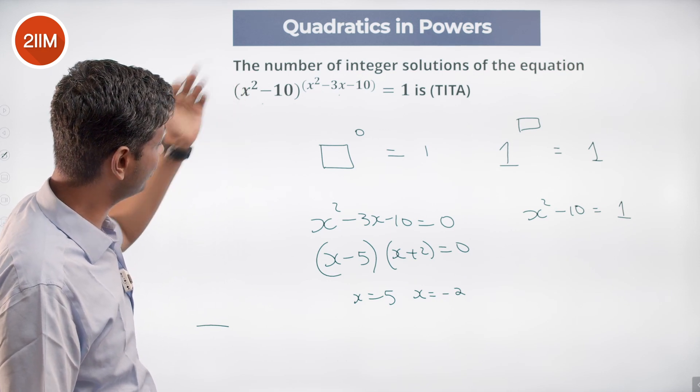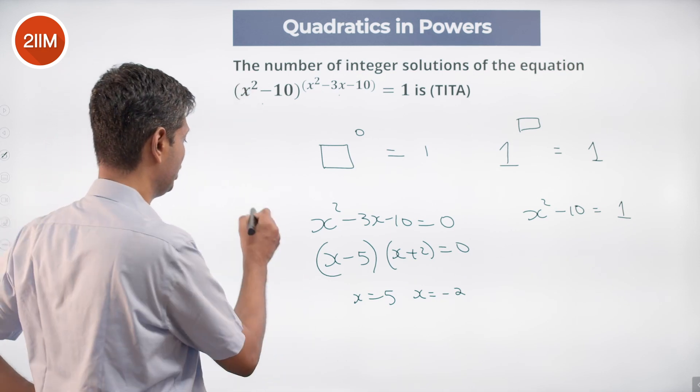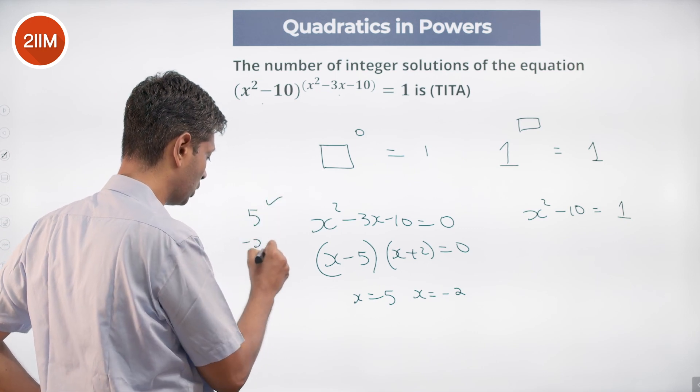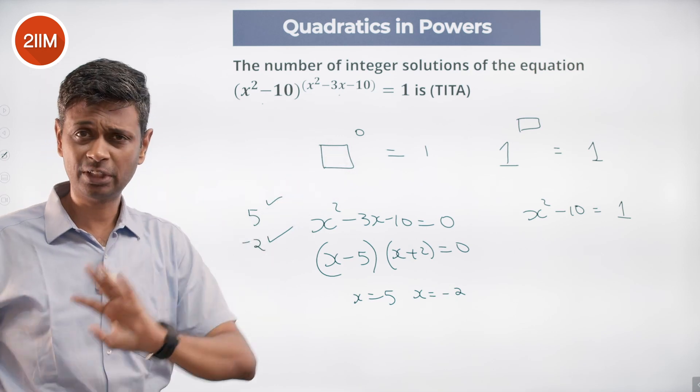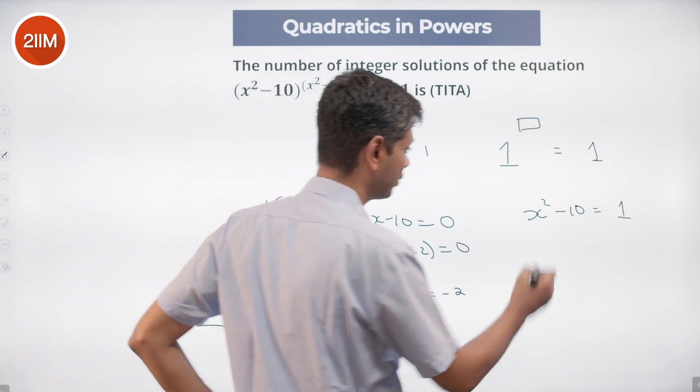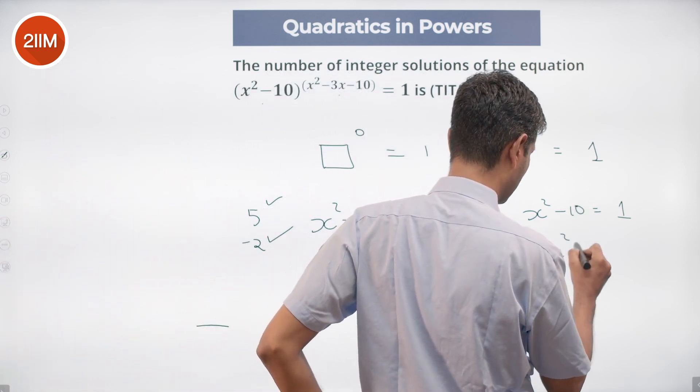So 5 works, -2 works. Nice, brilliant. 1 to the power of anything is 1. That is super interesting. So we'll say x² - 10 = 1, so x² = 11.